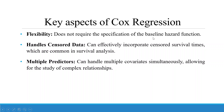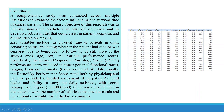Key aspects of Cox regression: flexibility — it does not require specification of the baseline hazard function. It handles censored data and can effectively incorporate censored survival times, which are common in survival analysis. It also handles multiple predictors simultaneously, allowing for the study of complex relationships.